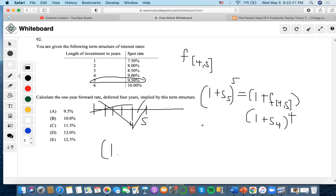So now, let's solve this. So spot rate five is...